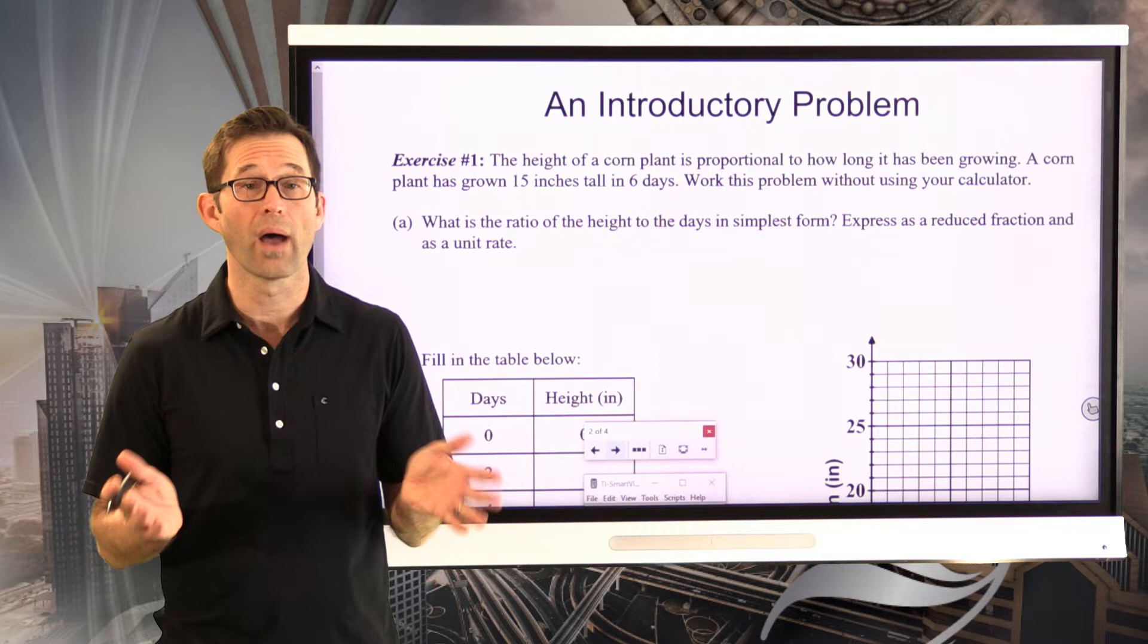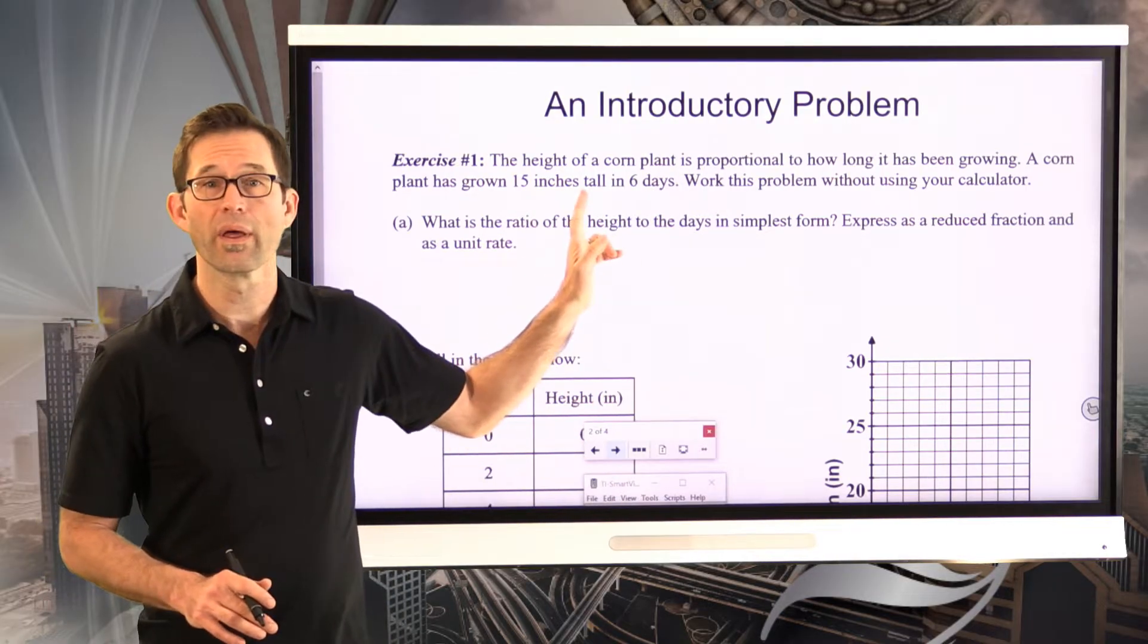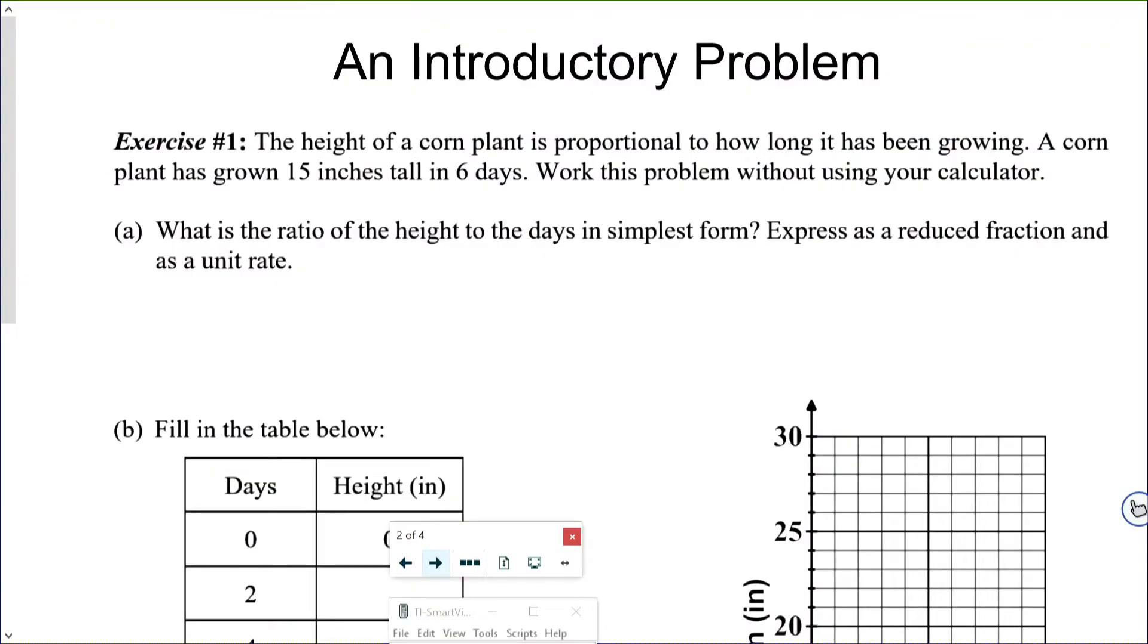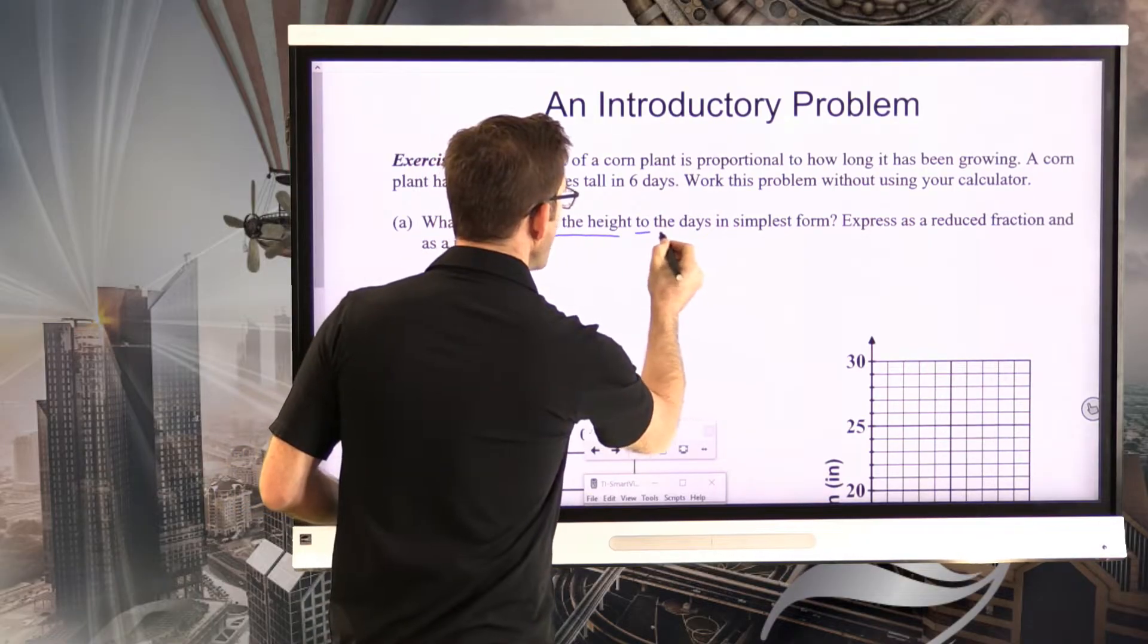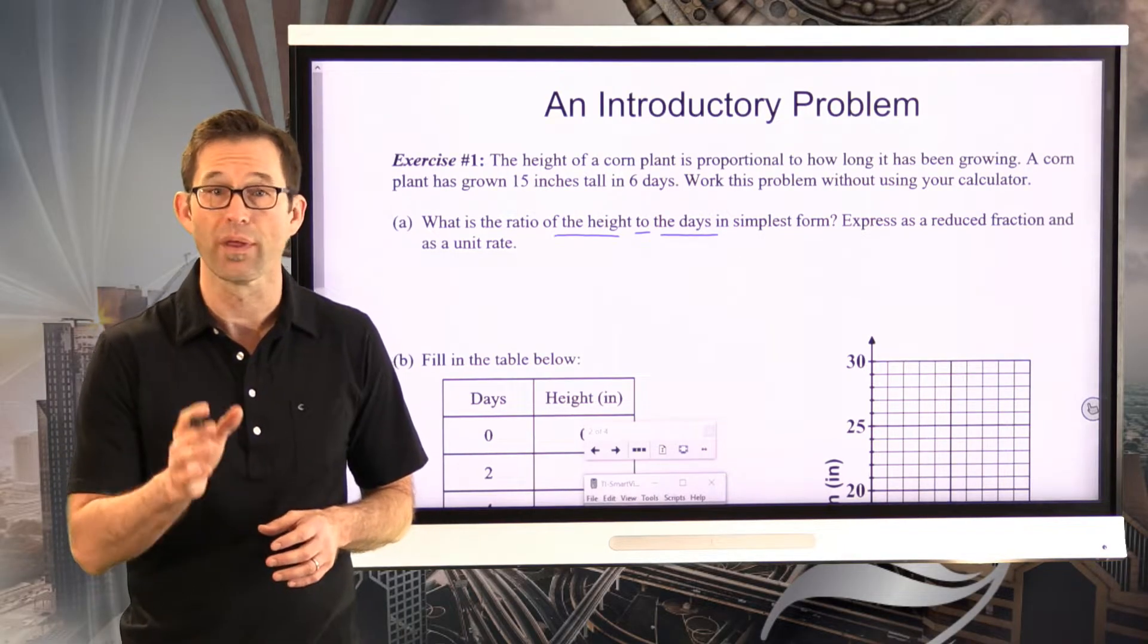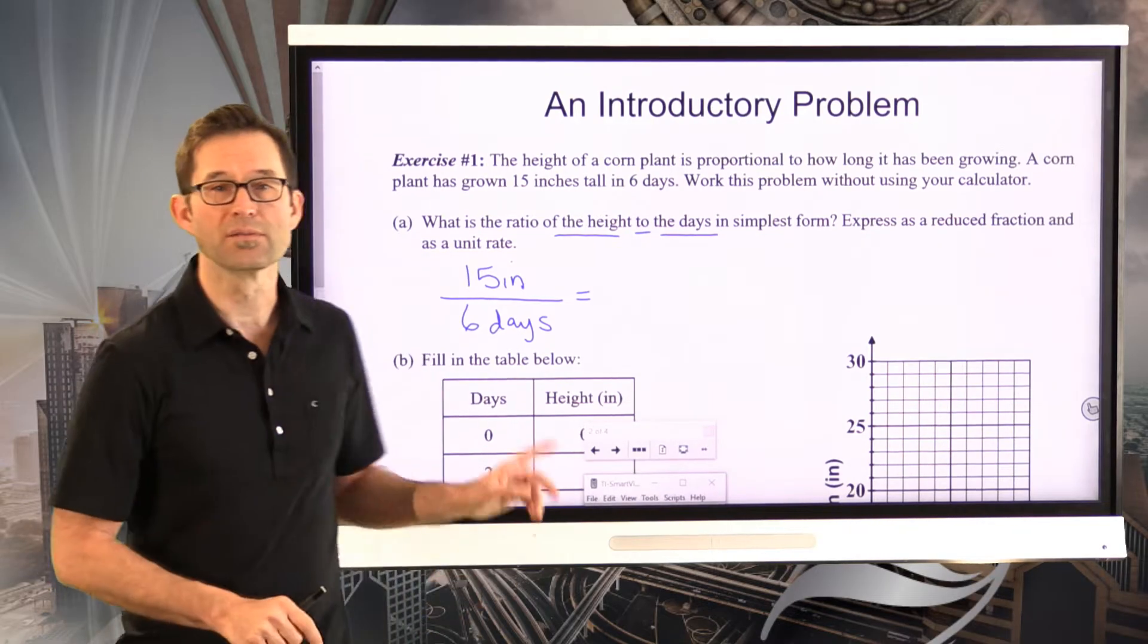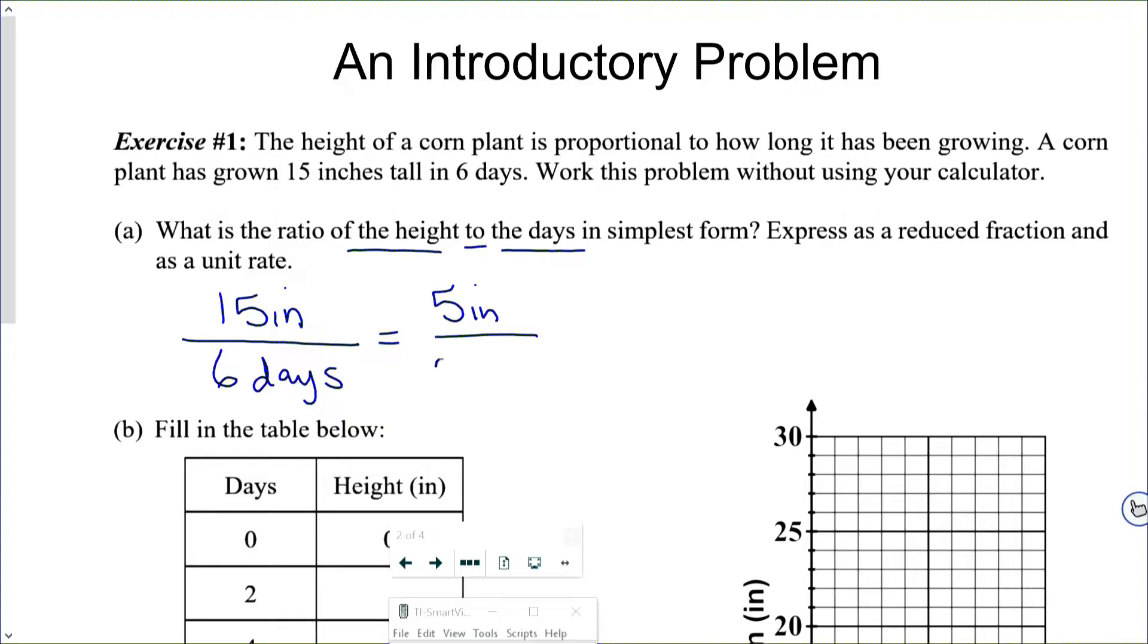Letter A asks us, what is the ratio of the height to the days in simplest form, expressed as a reduced fraction and as a unit rate? Pause the video now and use the fact that you know the corn plant is 15 inches tall in six days to figure out the answer to letter A. So we want the ratio of the height to the days. We're going to take our height, 15 inches, divide it by the days, six days, to produce a fraction. This fraction can be easily reduced because both 15 and 6 are divisible by 3.